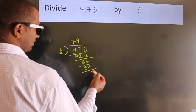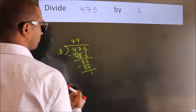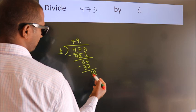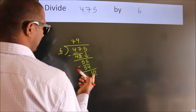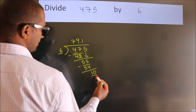After this, no more numbers to bring down. So what we do is, we put a dot and take 0. So 10. A number close to 10 in the 6 table is 6 times 1, which is 6.